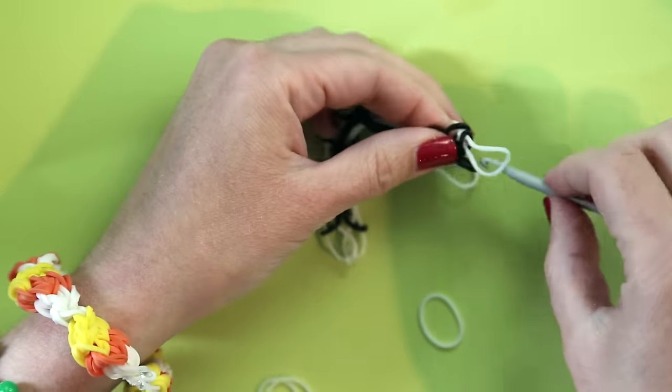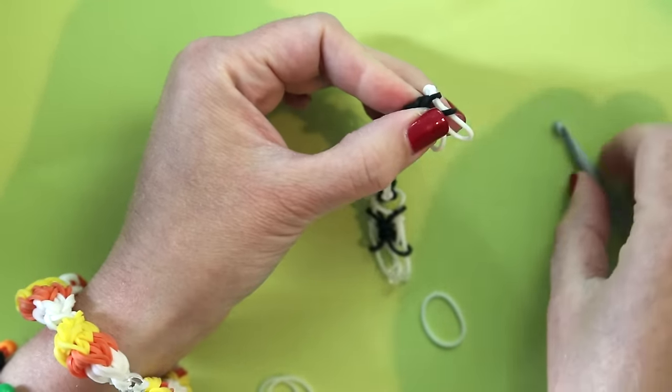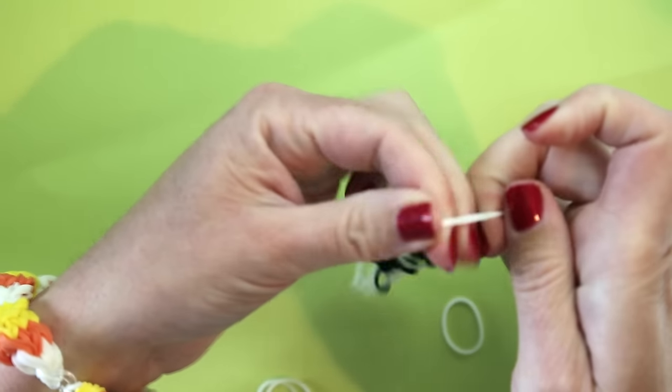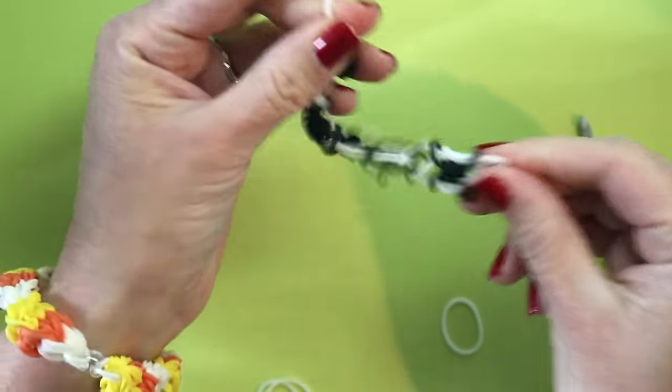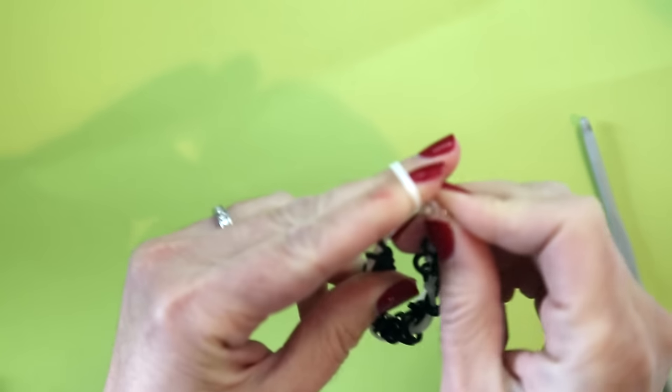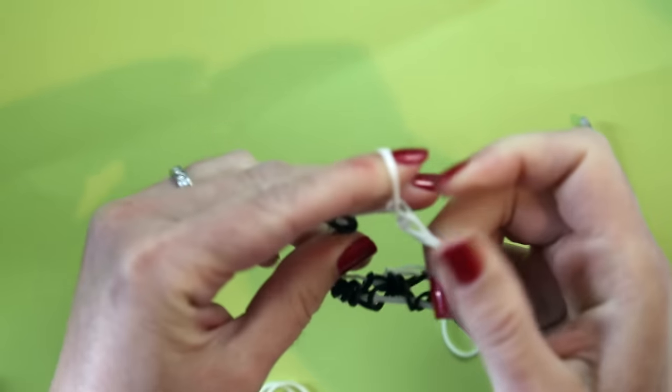The same way. Once you've got your last spider on, catch the two ends of your web. Stretch them tight and bring that c-clip around from the other side and hook them in.